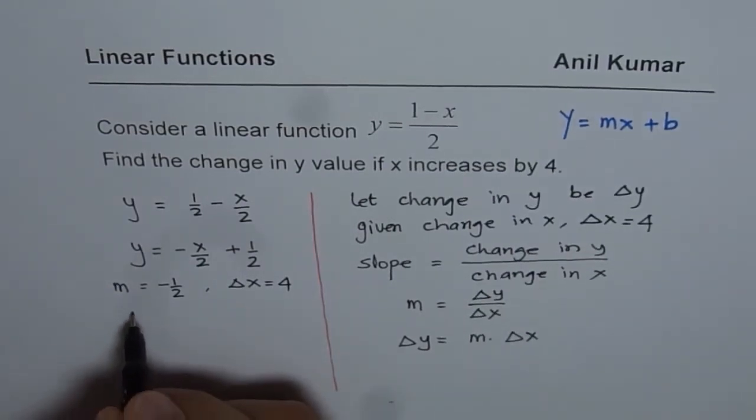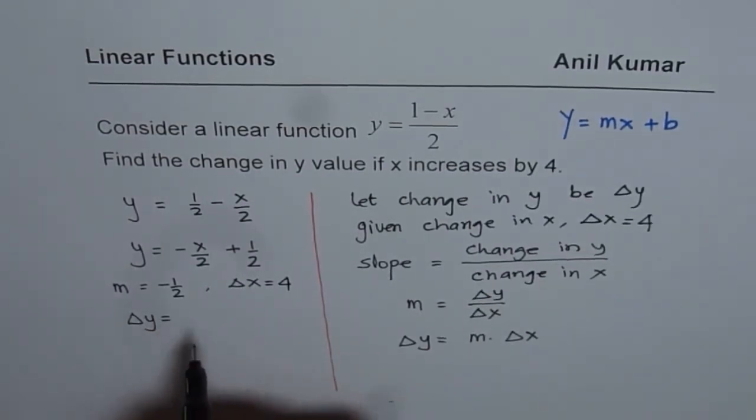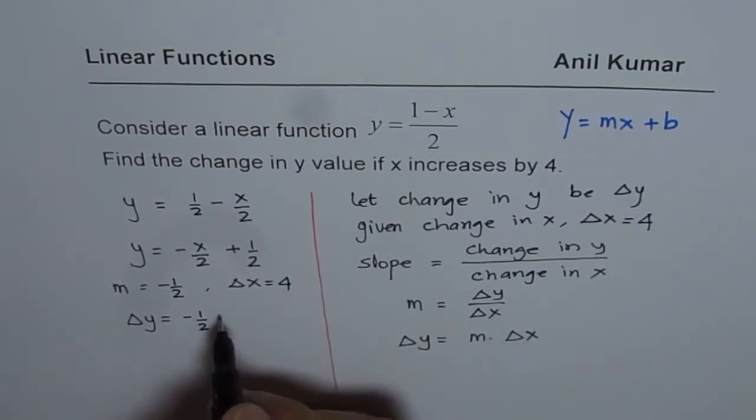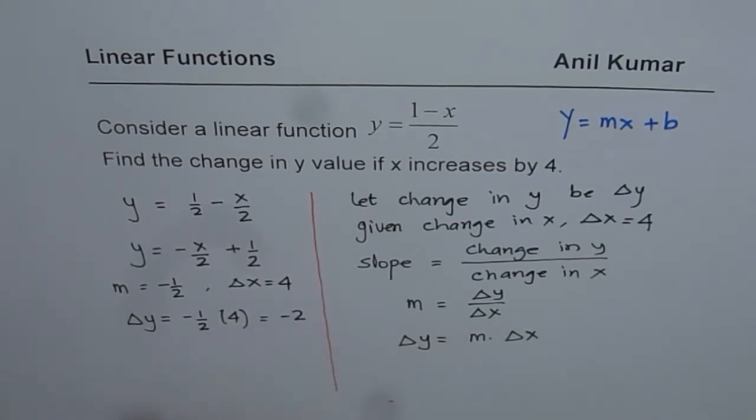So utilizing this information, we can say that change in y is equal to m times, which is minus half, times delta x, which is change in x, which is 4. So that is equal to minus 2. So that is the answer for us.